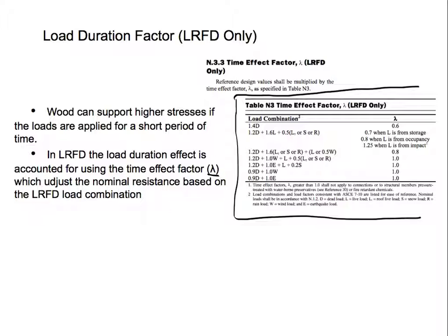The load combinations include 1.4 dead, and combinations with dead, live, and snow load. It's always a good habit to read the footnotes and understand what the code is telling you. For dead load, the time effect factor lambda is straightforwardly 0.6. For other combinations, it depends on your live load. If lambda is 0.7, the live load is from storage. If it's 0.8, the live load is from occupancy. If it's 1.25, the live load is from impact. You use your load combos, then assign the corresponding time effect factor lambda.